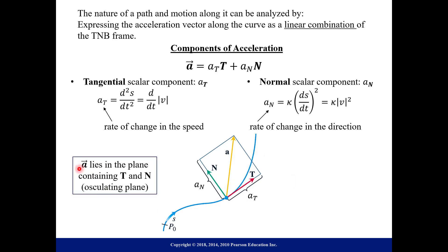The acceleration vector a lies in the plane containing T and N, which is called the osculating plane. In this visual, a lies in the plane — like on a piece of paper that T and N are also lying on.